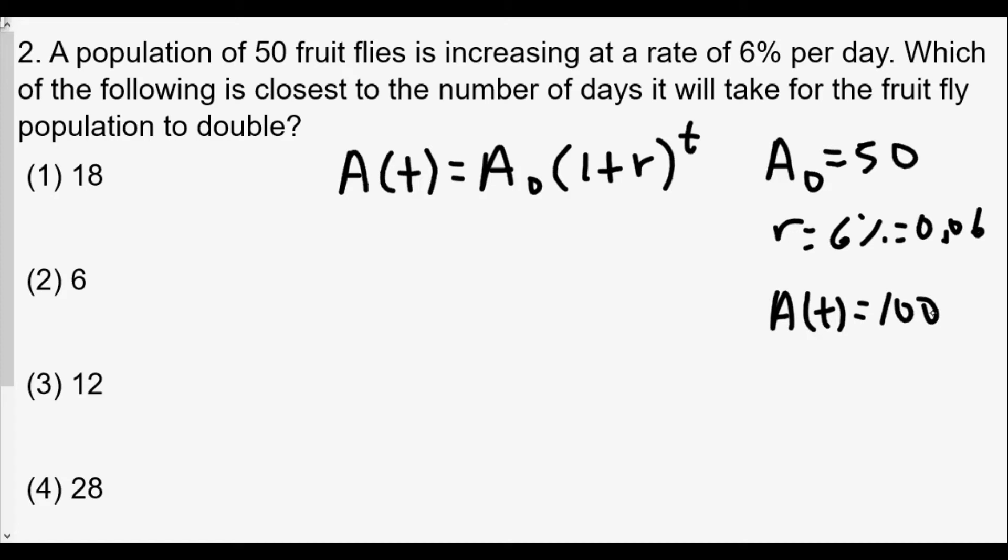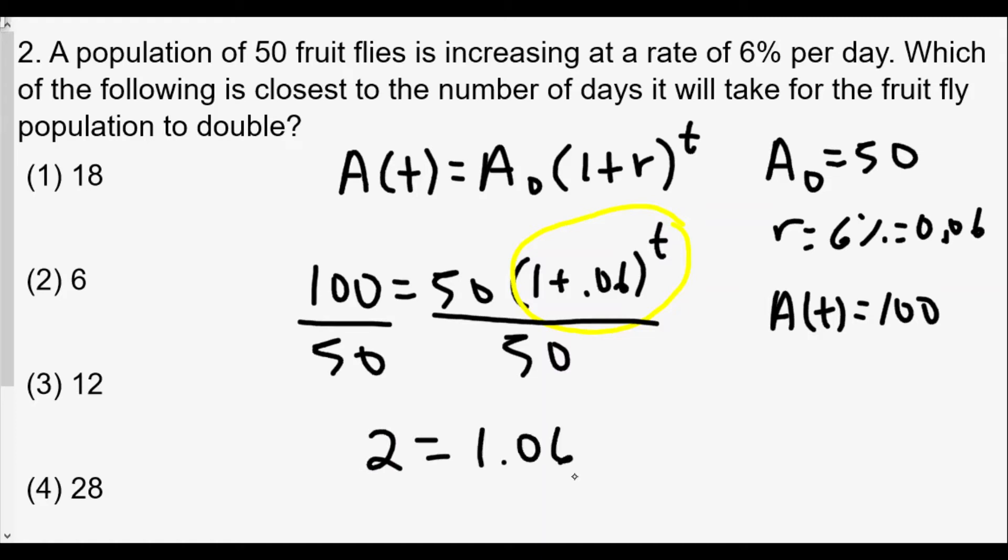Plugging into our formula: 100 equals 50 times (1 + 0.06) raised to t power. To solve for t, we'll divide both sides by 50. We get 2 equals (1.06) to the t power. We can take this formula and plug in values to see which one gives us close to 2.